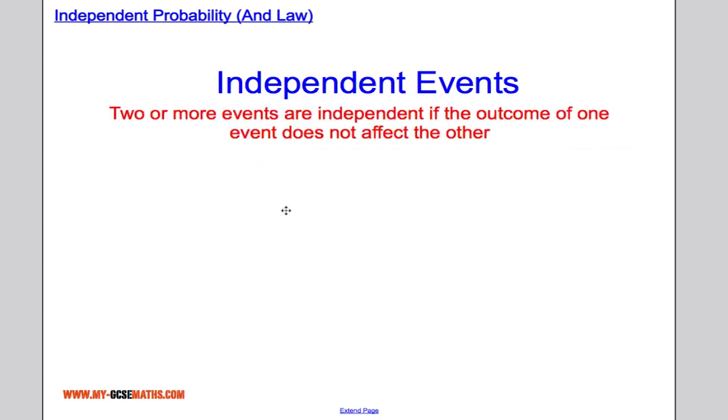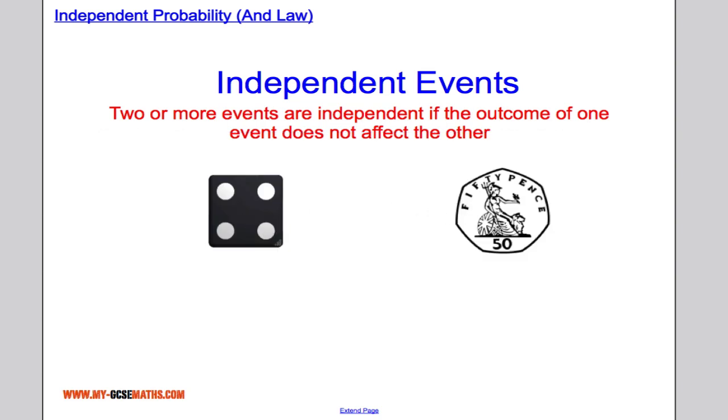For example, rolling a die and tossing a coin. The probability of rolling a 2 is 1 out of 6. The probability of getting tails is 1 out of 2. What happens with the die has no effect on the coin and vice versa, so these events are independent. The outcome of rolling the die does not affect the outcome of tossing the coin.